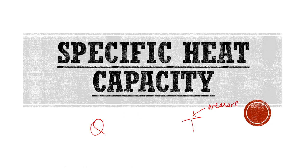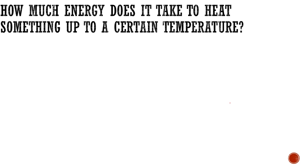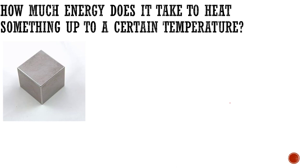We're going to be using these two in a very connected fashion when we look at specific heat capacity, but I just want to make sure, straight off the bat, we recall those two definitions. Now, to start talking about what specific heat capacity is and where it all comes from, I want to start with a key question: how much energy does it take to heat something up to a certain temperature? When I say something, I literally mean just a thing — it could be a block of metal, for example.